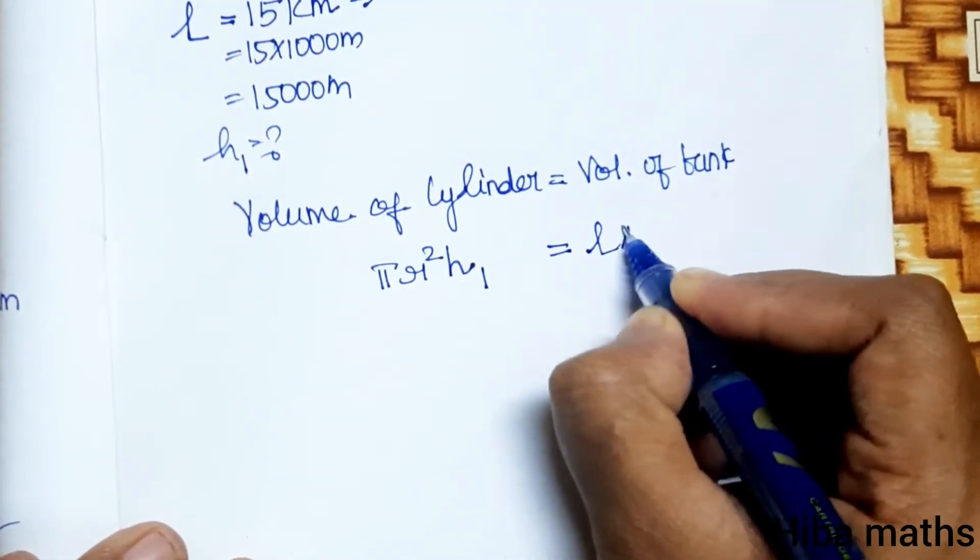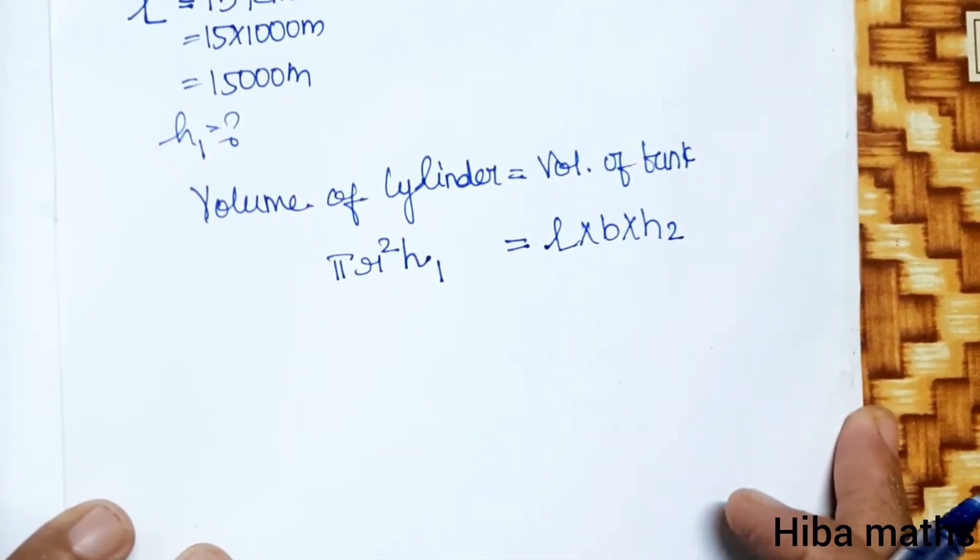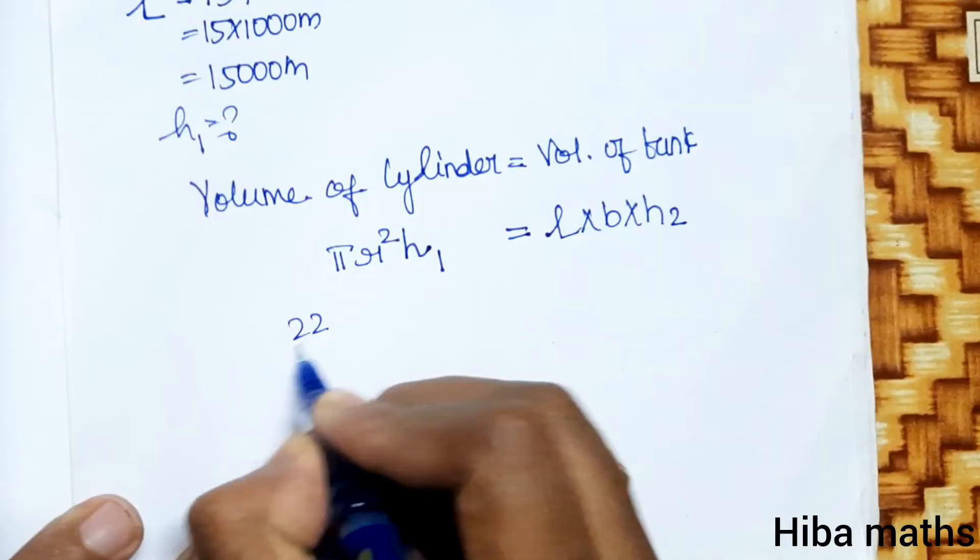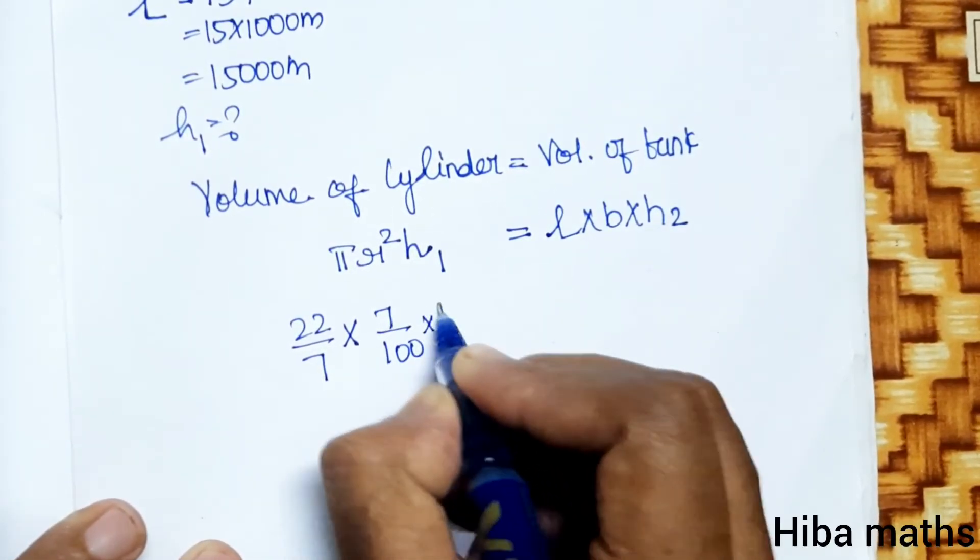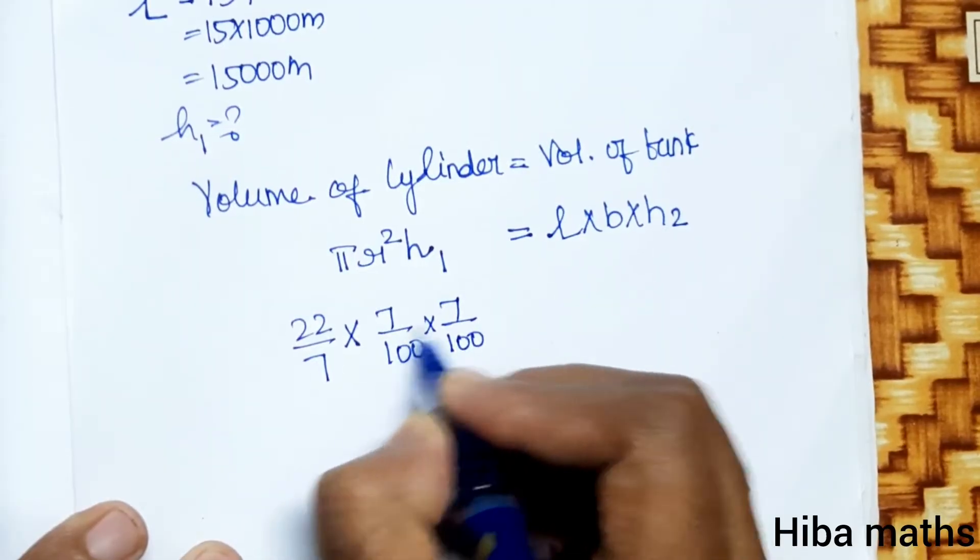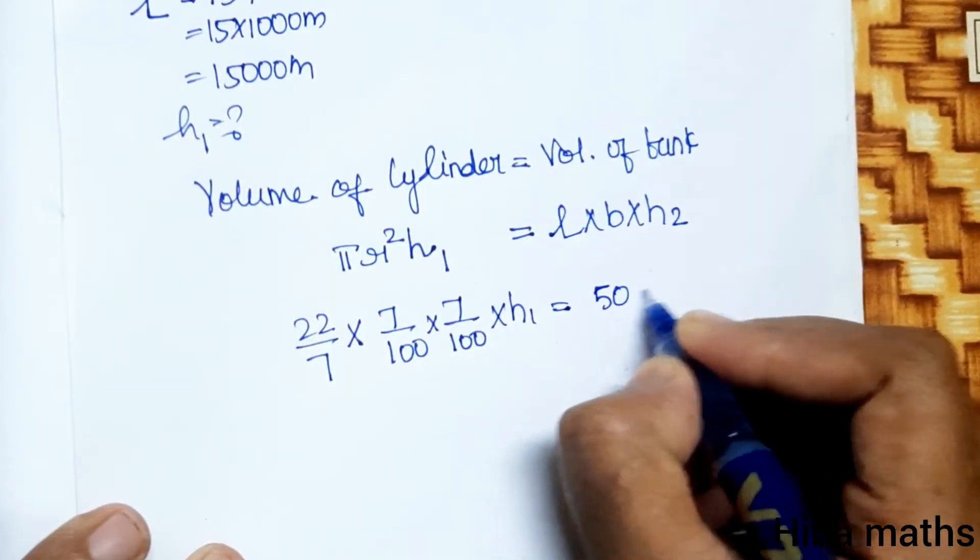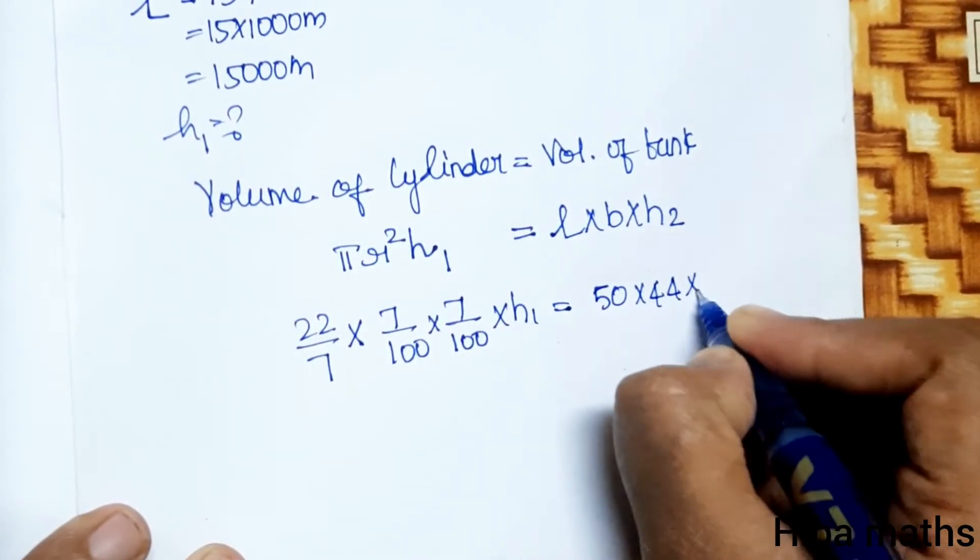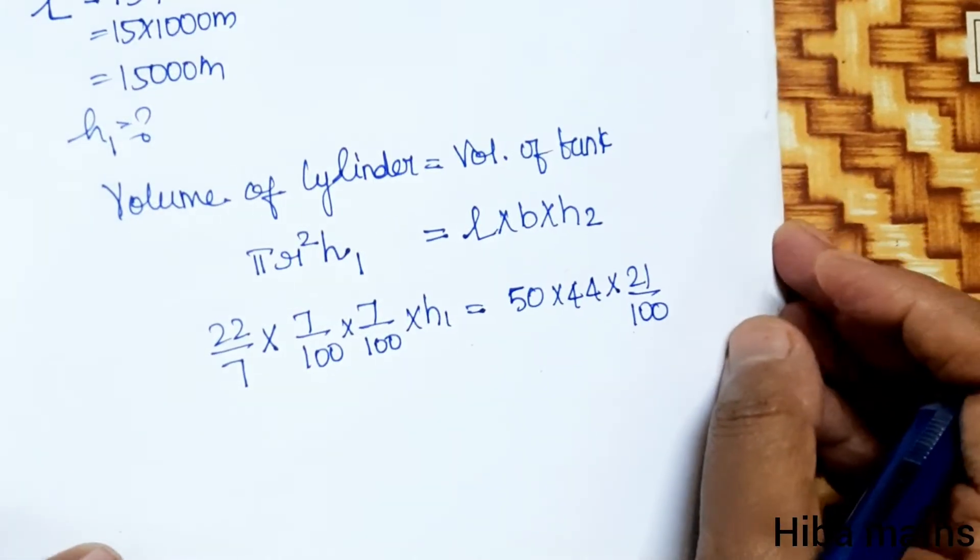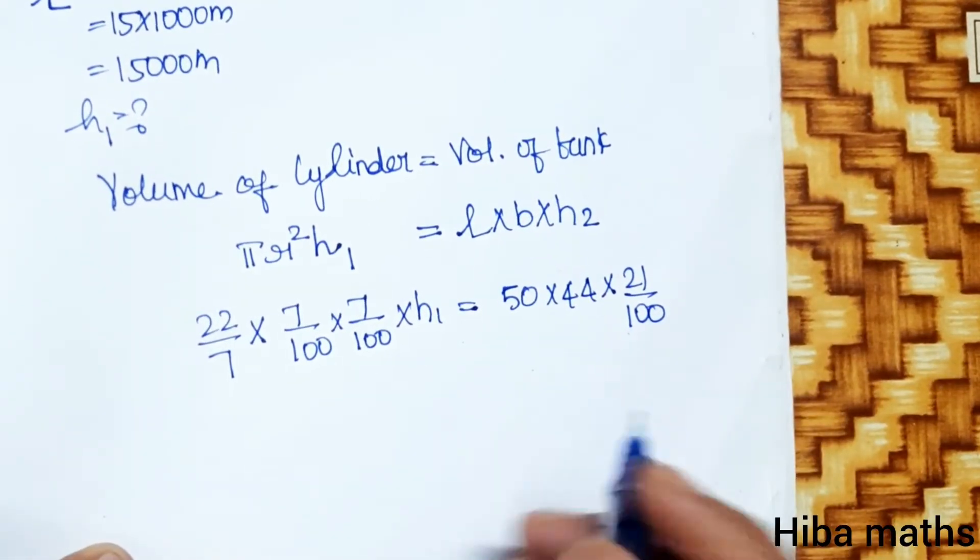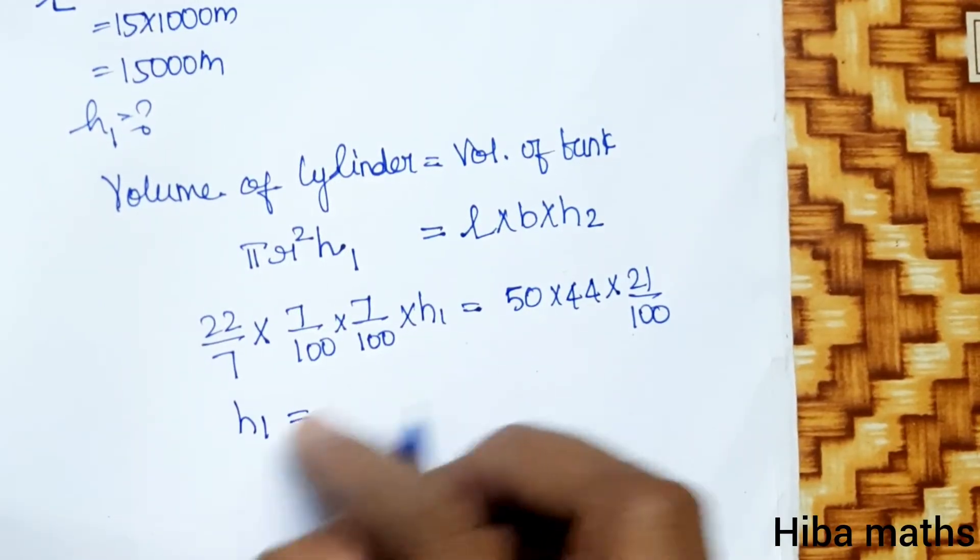Volume of tank equals length into breadth into h2. Now substitute: pi equals 22 by 7, r square equals 7 by 100 square. Cancel: 7 by 100, h1 divided by 50, 44, h2 equals 21 by 100. Cancel h1 here.